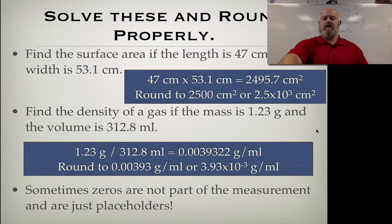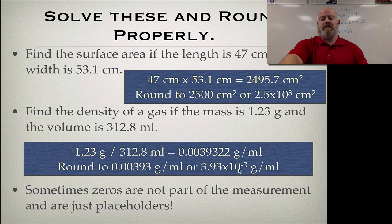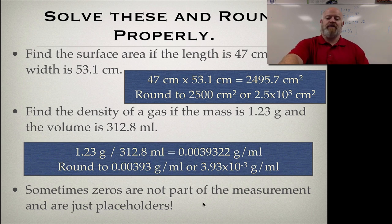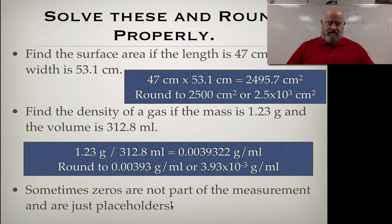So our long calculator answer rounds to 0.00393 g/mL. Written in scientific notation that's 3.93 × 10⁻³ g/mL, and the placeholder zeros disappear. Keep in mind that sometimes zeros are not part of the measurement — they're just placeholders. That ends this video lesson. There's additional practice at the end of the lesson, and we'll do more practice in class.